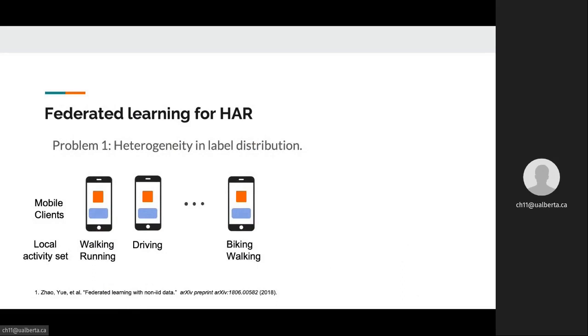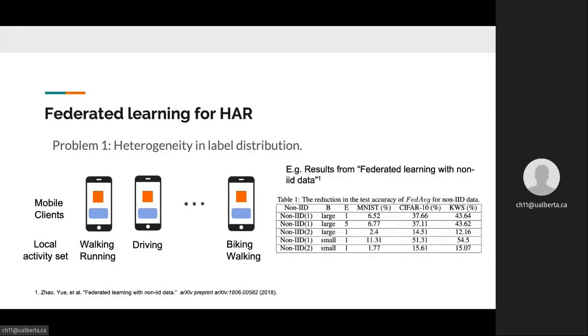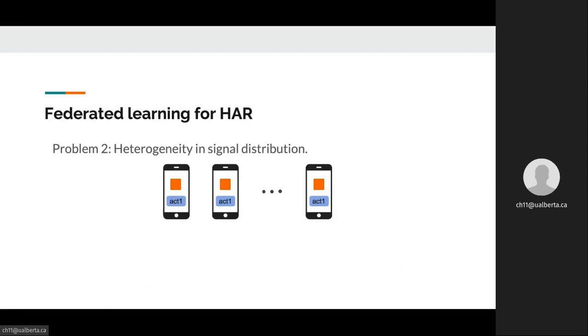However, directly applying federated learning to HAR can be problematic. The first problem is the heterogeneity in label distribution, also known as the non-IID data distribution in the federated learning field. This refers to the problem that local datasets have different distributions in sample labels. For example, different clients have different activity types. Furthermore, the proportions of the same activity types are also different from client to client. Previous work has shown that heterogeneity in label distribution can cause substantial performance degradation up to 50% on image classification tasks, as reported in the paper Federated Learning with Non-IID Data.